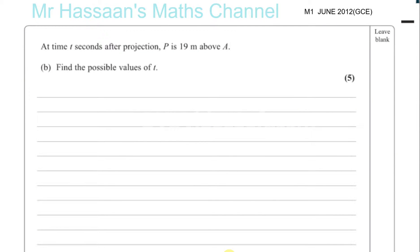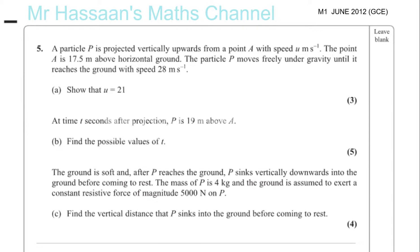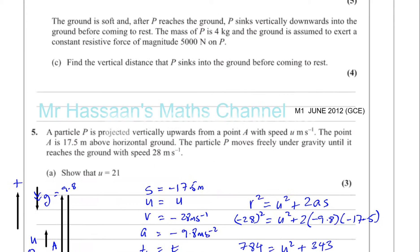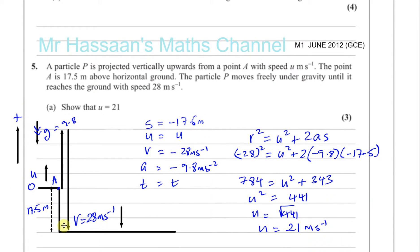Continuing on from where we left off from M1 June 2012, finishing part a. The particle was projected from 17.5 meters above horizontal ground, went up until it reached zero velocity, then came back down hitting the ground at 28 meters per second. We worked out that the initial velocity with which it was thrown was 21 meters per second.